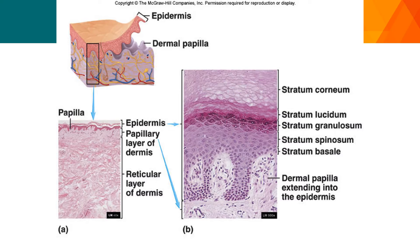Fingerprints collected at crime scenes can be matched to a database to determine who was involved. The dermal papillae are most important for this. You can see the different layers — the epidermis, the papillary layer of the dermis, and the reticular layer. The difference between thick skin and thin skin is the presence of the stratum lucidum. If all four layers are present — corneum, granulosum, spinosum, and basale — that is considered thin skin.